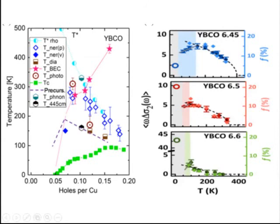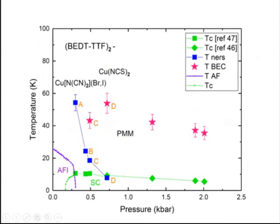For much more underdoped YBCO 6.45, the onset temperature is very high, but we notice that the apparent transient superfluid density is much higher than the equilibrium value. This means that the light is doing something more. I will come back to this point at the end of my talk; otherwise, this feature is very similar to LSCO.